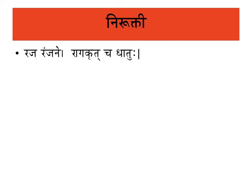Ranjan Varn Pradhan Karan — the process in which the body constituent present in the body acquires Raagvarn, meaning red color, that Dhatu is known as Rakta Dhatu. Ranjan is a process of color formation. The body constituent which is red in color is called Rakta Dhatu.